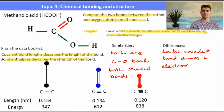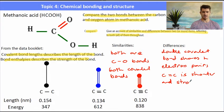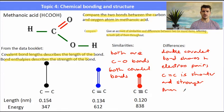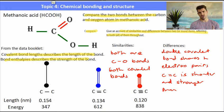The carbon-to-oxygen single bond shares only one pair of electrons, which means it will be longer and not as strong as the carbon-to-oxygen double bond. If you look it up in the data book, you'll be able to find the carbon-to-oxygen single bond and the carbon-to-oxygen double bond information. The main point is the carbon-to-oxygen double bond will be both shorter and stronger because it shares a greater number of electron pairs compared to the carbon-to-oxygen single bond, which shares only one pair of electrons.